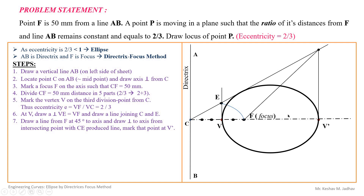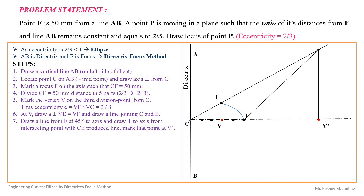To get enough points to draw the ellipse, we need to find a number of points between V and V'. Divide VV' into a number of equal parts — dividing into equal parts gives equispaced points that are easier to join with a smooth curve, though equal division is not compulsory. Number the division points from V towards V' like 1, 2, 3, 4, and so on. From each of these points, draw vertical lines perpendicular to the axis.